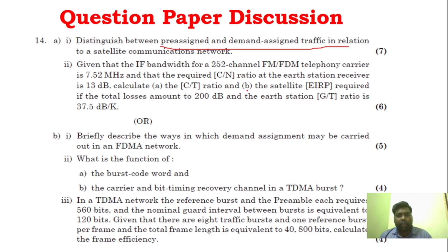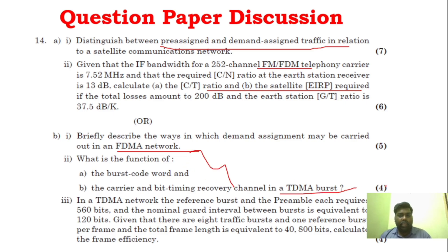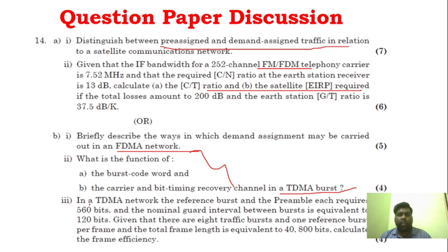Another problem in Unit 3 is EIRP-related. For Unit 4, the next question is FDMA-related, followed by a TDMA question. There is also a four-mark TDMA problem. These problems are actually very easy — TDMA and FDMA concepts are straightforward using the formulas. Definitely, the fourth unit strategy is: one path is theory, one path is problem-solving.